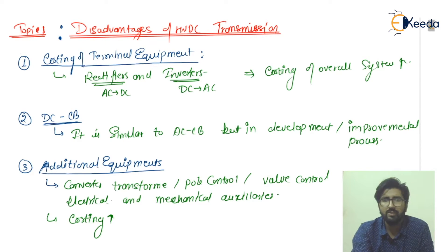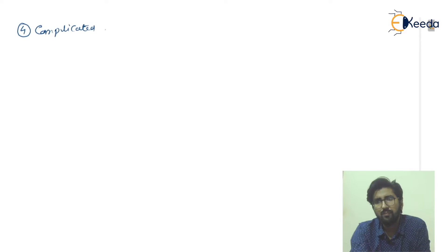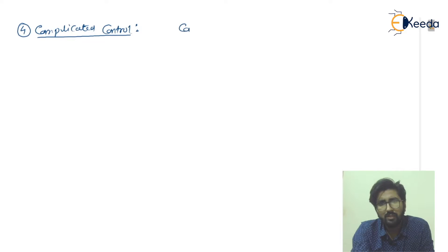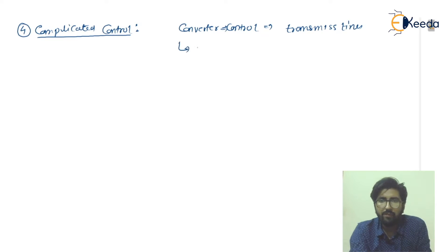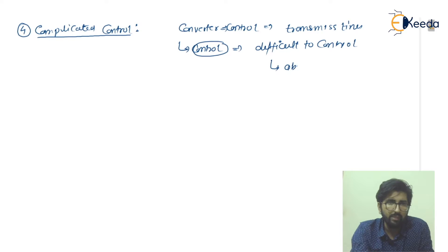Point number four is complicated control. Because converters are used to control the transmission lines, the control process becomes difficult — particularly under abnormal conditions. So the control of HVDC systems is more complicated than conventional AC systems, especially when the system is not operating under normal conditions.